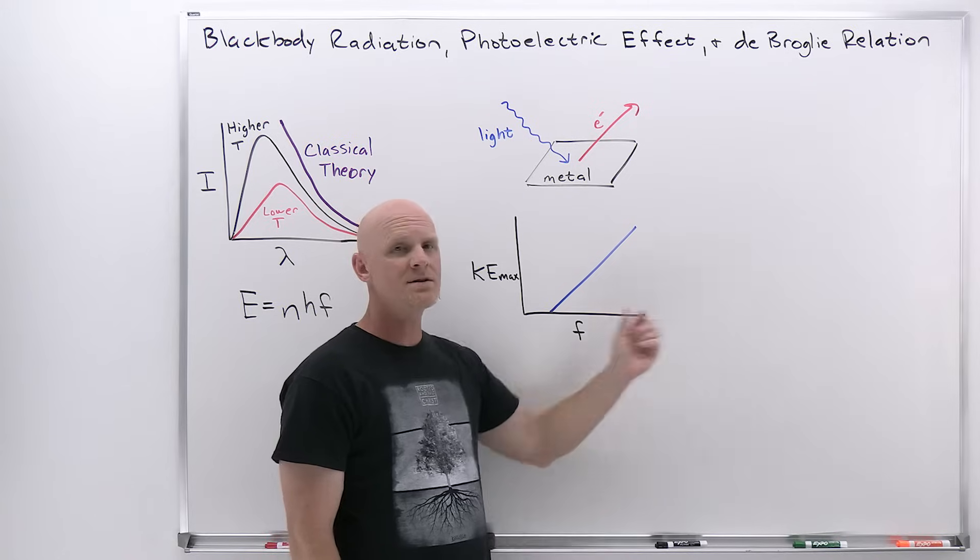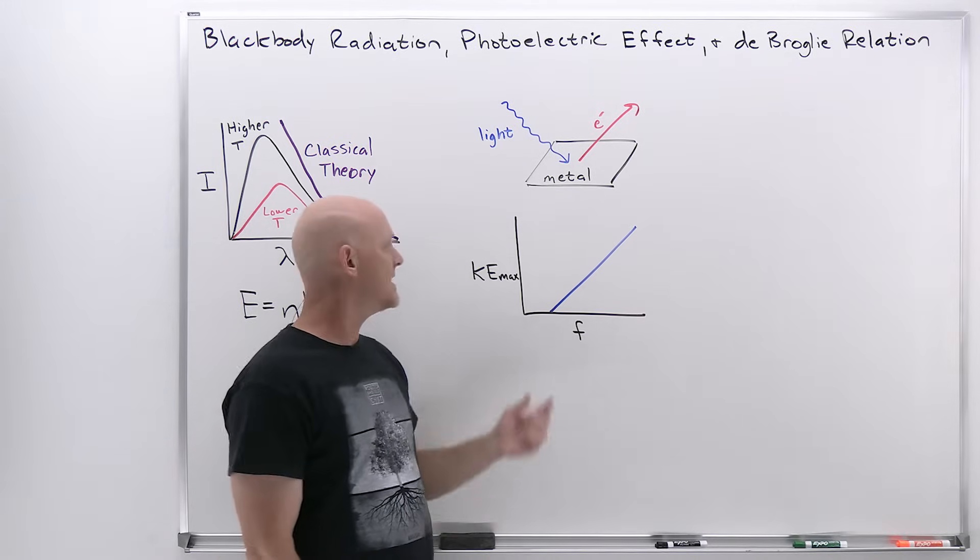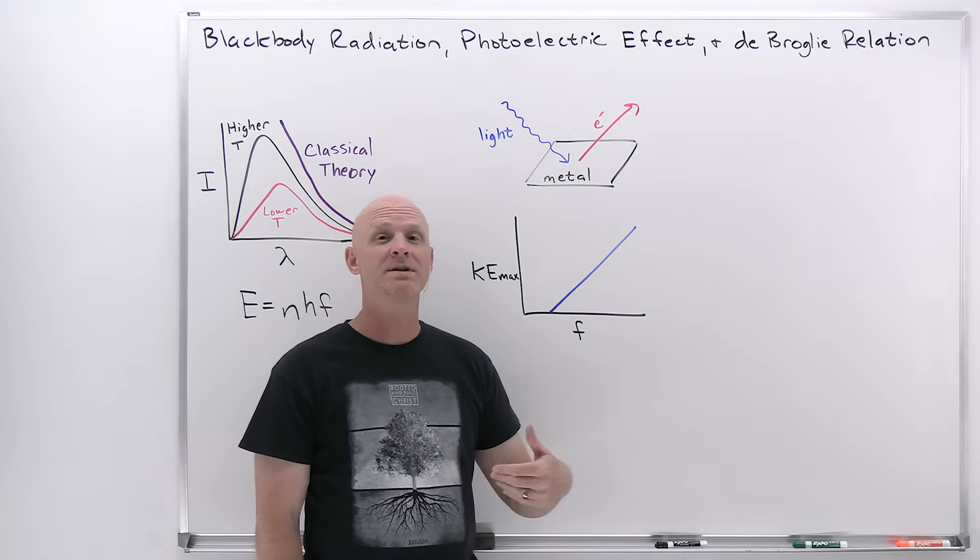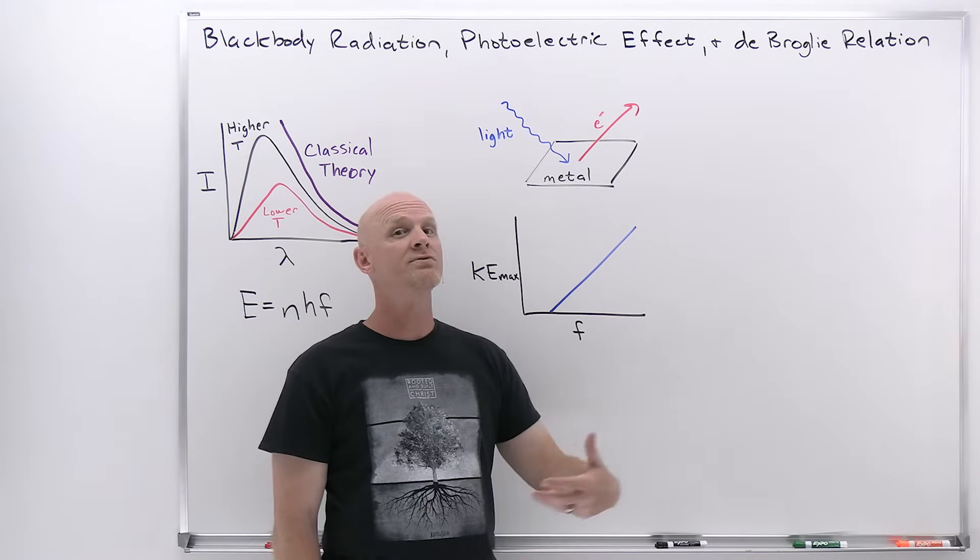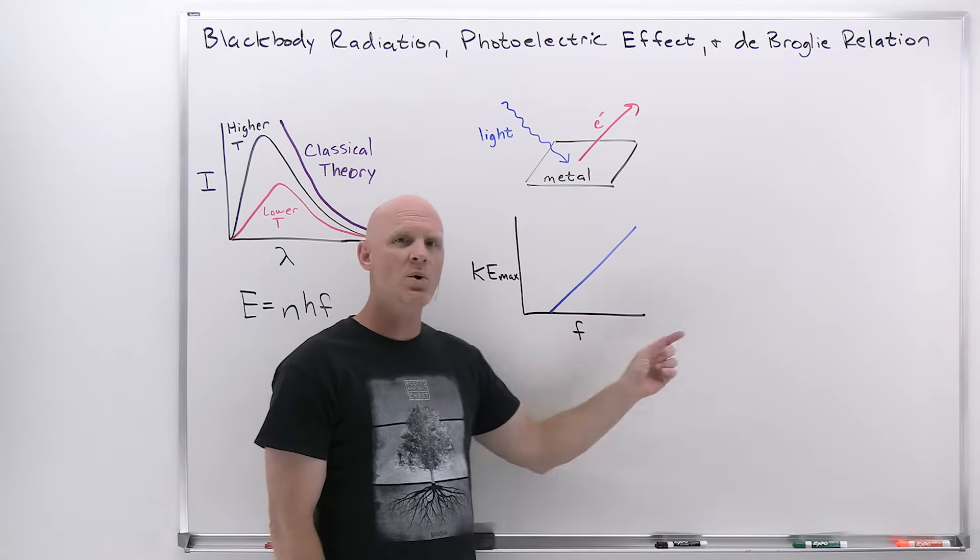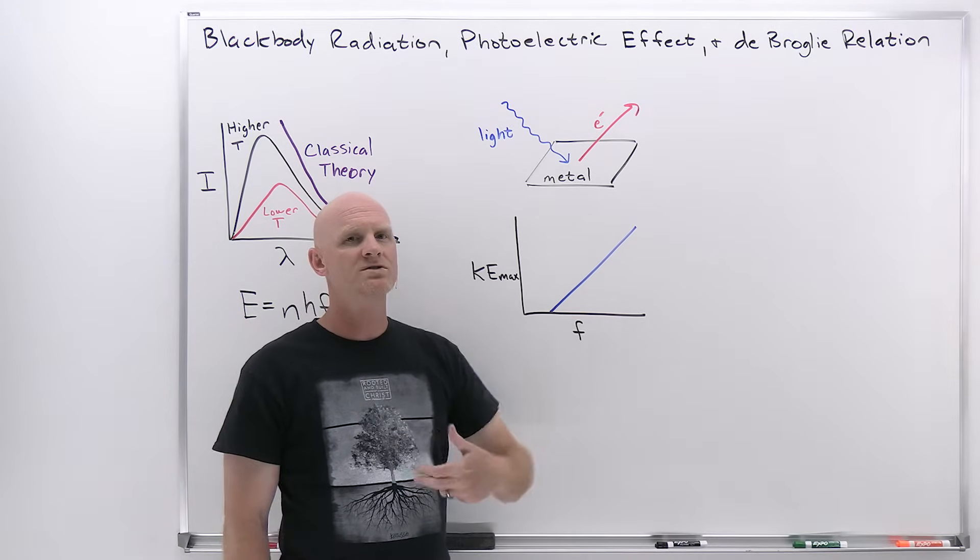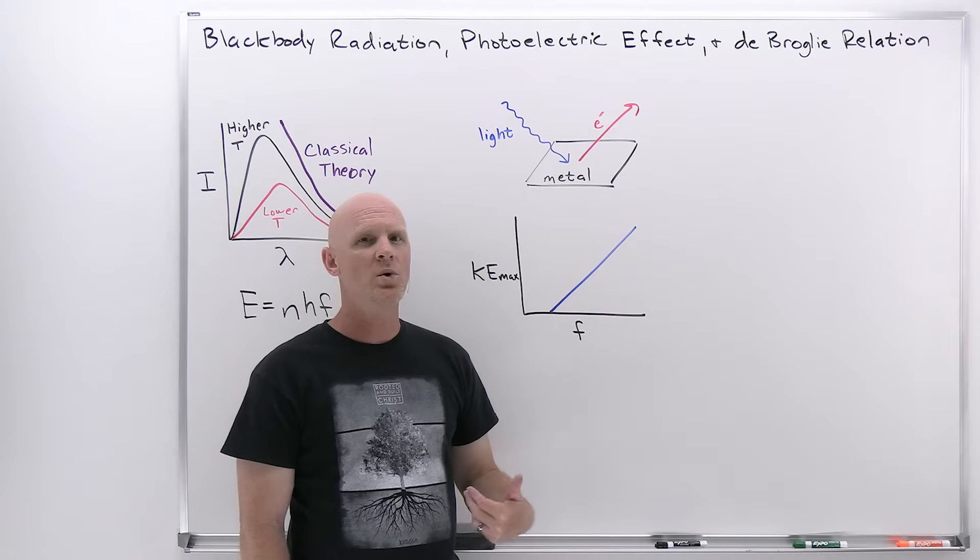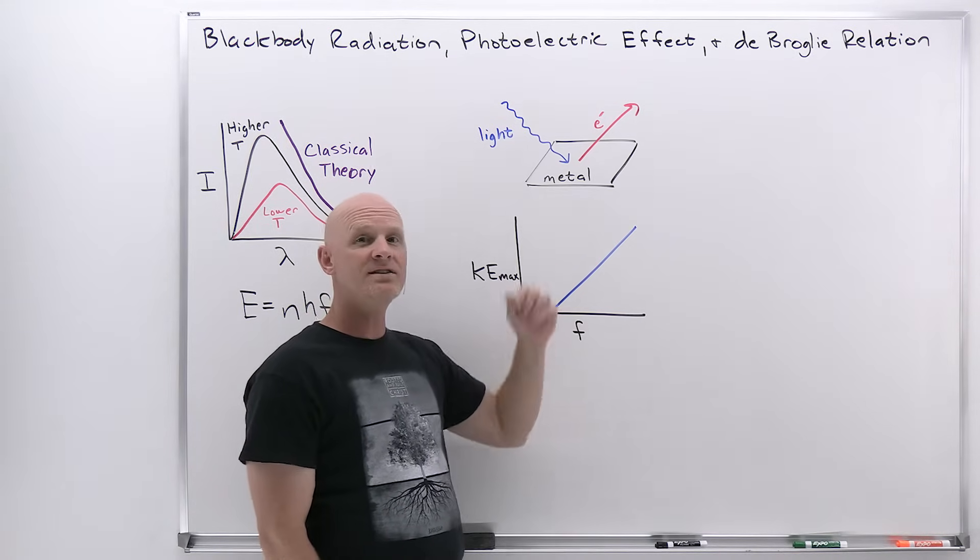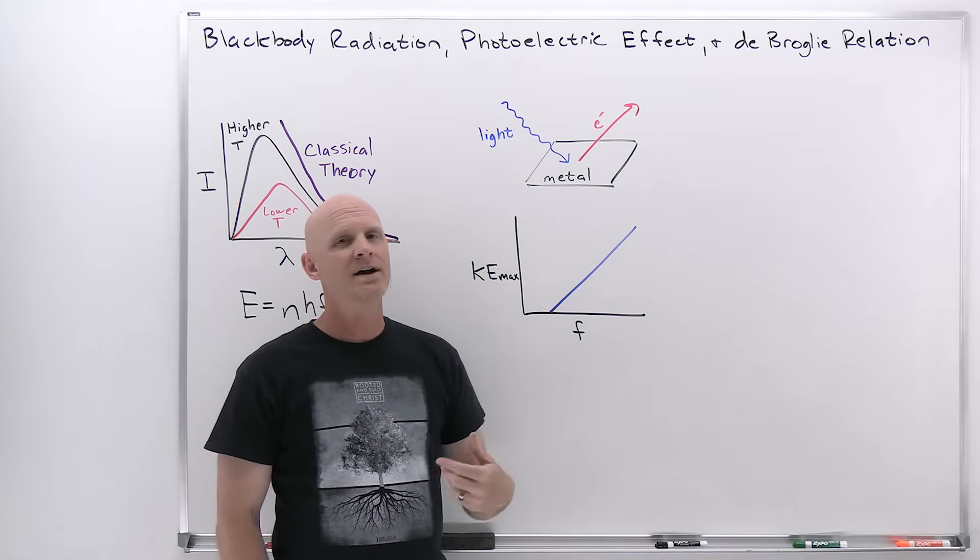But once you reach this threshold frequency, you could have the least intense beam possible, but you'd start seeing electrons ejected. And all of a sudden the energy wasn't related to the intensity, but somehow it ended up being related to this frequency. In fact, as you increase the frequency beyond that threshold frequency, you'd start seeing greater and greater maximum kinetic energy from those electrons. They'd be ejected with greater velocity, more kinetic energy.